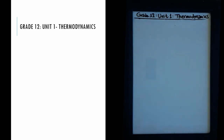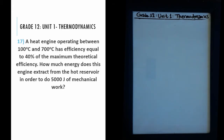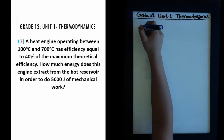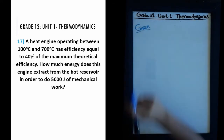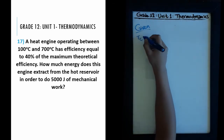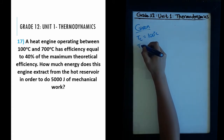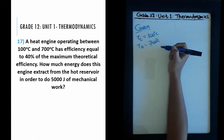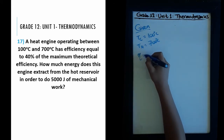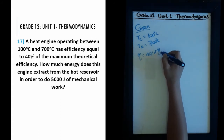Moving on to the second question of the thermodynamics unit. The question states: a heat engine operating between 100°C and 700°C has an efficiency equal to 40% of the maximum theoretical efficiency. How much energy does this engine extract from the hot reservoir in order to do 5000 joules of mechanical work? We are given T_cold = 100°C, T_hot = 700°C, and efficiency equal to 40% of the maximum efficiency.